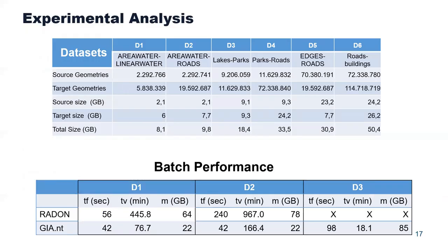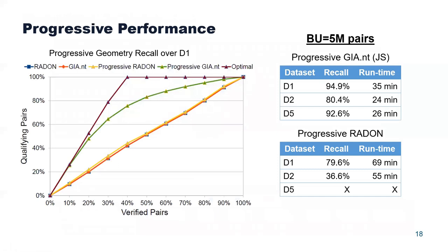To evaluate our approaches experimentally, we employed six real-world datasets, each involving several millions of entities, with the largest amounting to almost 200 million entities. Regarding the performance of the batch algorithms, we applied them to three datasets: the two smallest ones where Radon is applicable, and one of the largest where Radon does not scale. We observe that filtering time is very low for both algorithms, yet GIANT is much faster. The verification time is the bottleneck in every case, but since GIANT relies on the intersection matrix, its running time is much lower than that of Radon. GIANT also reduces memory requirements by more than 50%.